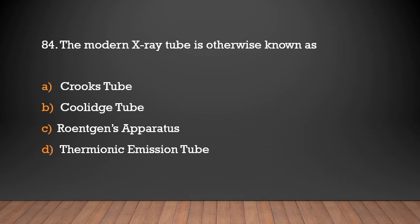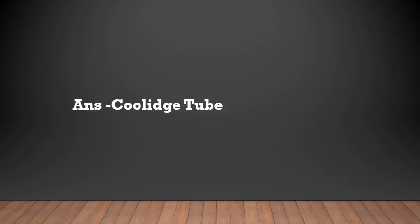The modern X-ray tube is otherwise known as: Crookes tube, Coles tube, Ronjan Separatus, Thermionic Emission tube. Answer: Coles tube.